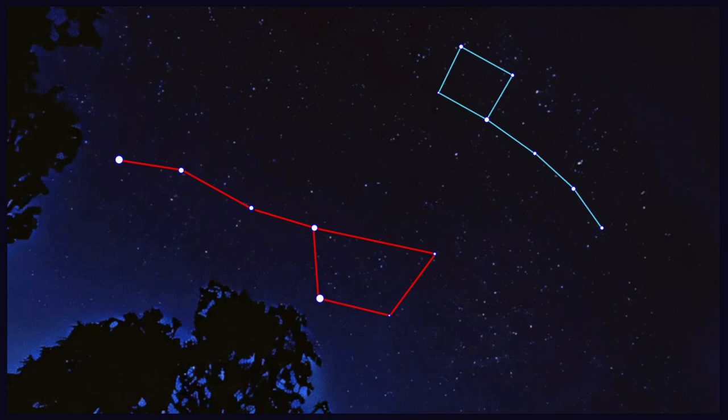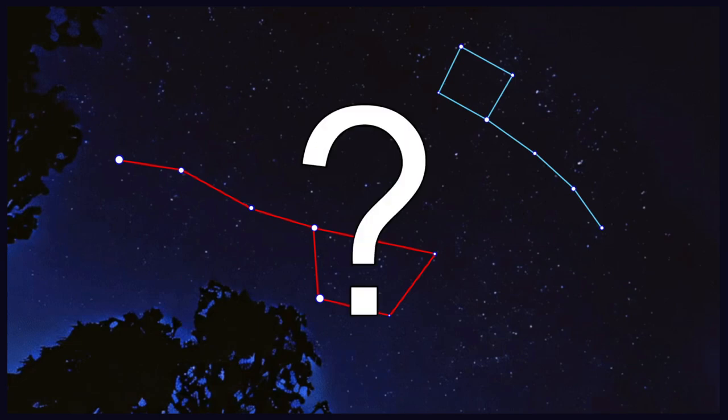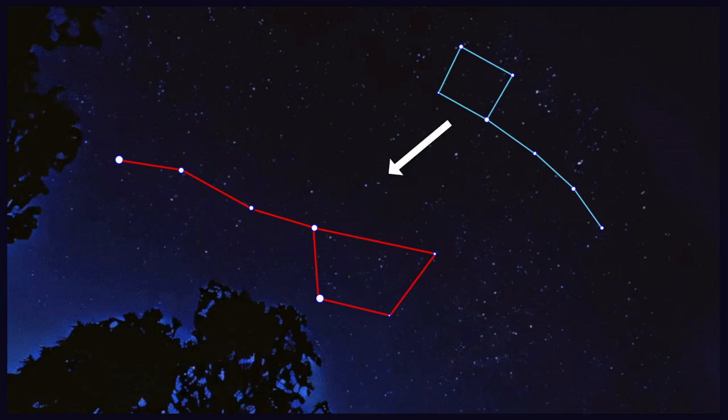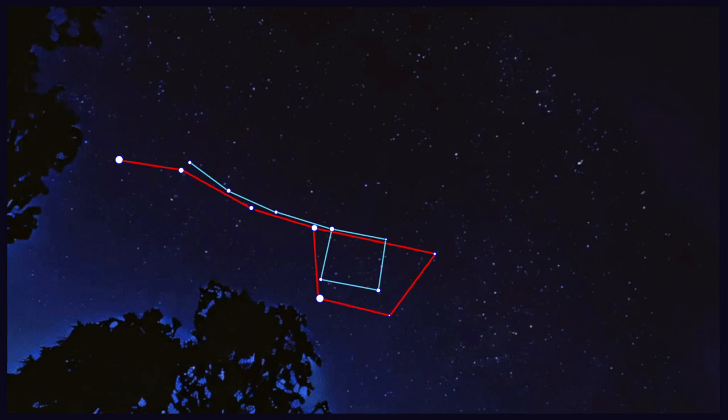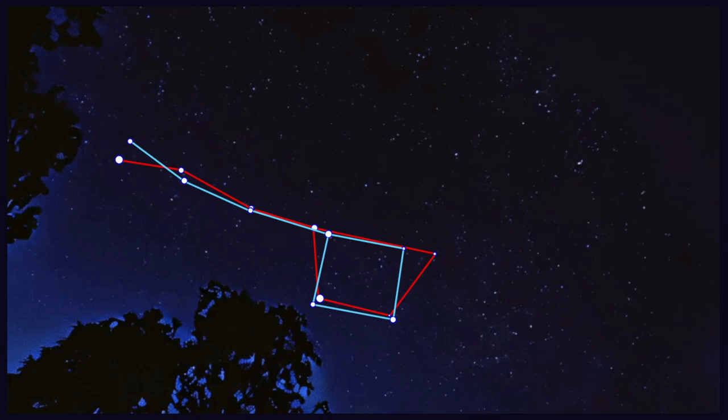Now, after a period of reflection, we start wondering just how similar are the two? Well, in order to answer this question, we need to translate one of them, rotate it, and then scale it, without modifying the original shape of the dipper. But how do we find these transformations?